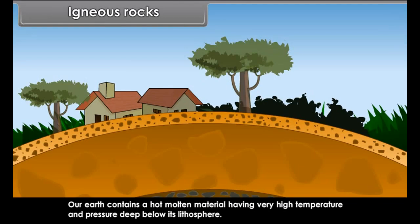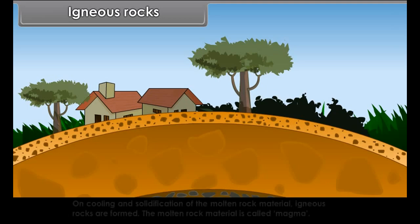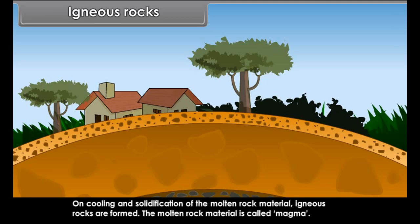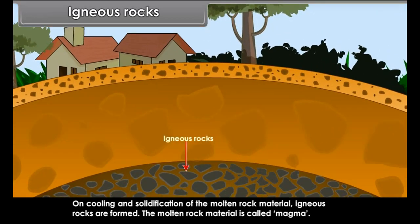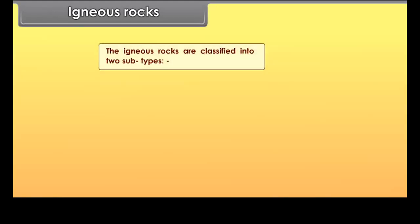There are some metallic minerals like copper, iron, gold, etc., and some non-metallic minerals like gypsum, mica, etc. Minerals are very important for the development of humankind.